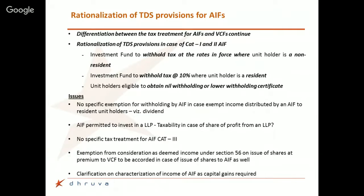Looking at a couple of practical issues: there is no specific exemption from withholding by an AIF in case the exempt income distributed by an AIF to a resident unit holder is a dividend. So if AIF category 1 or 2 earns dividend income — which is exempt — and distributes it to a resident investor, the provisions still mandate a 10% TDS, meaning the investor would need to claim a refund, which is a tedious procedure.